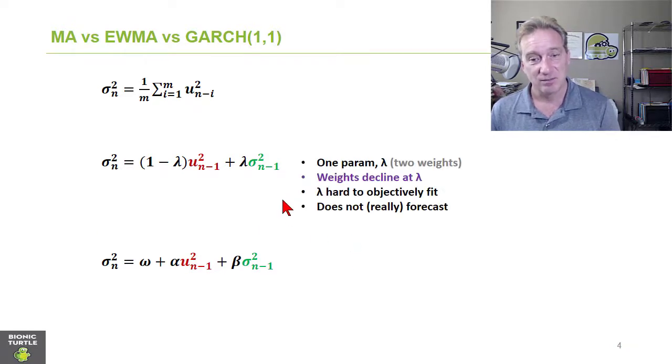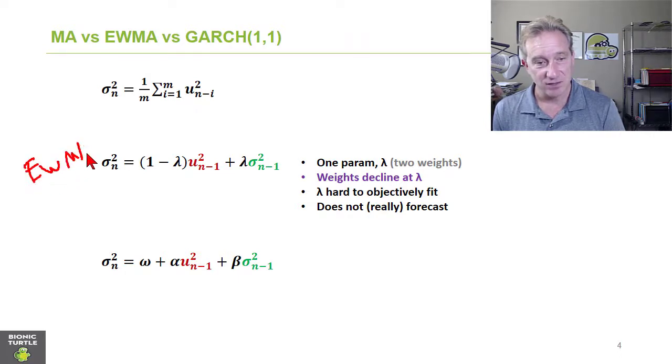Then we just recap with just key features. We said for the exponentially weighted moving average that it has one parameter, lambda. The weights decline in constant proportion. So the ratio of consecutive weights is lambda. That's the meaning of the parameter.